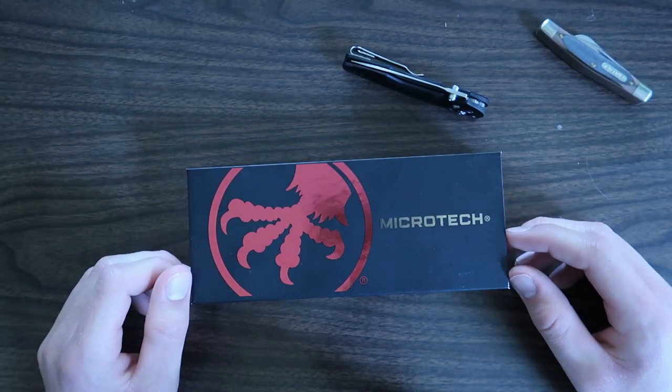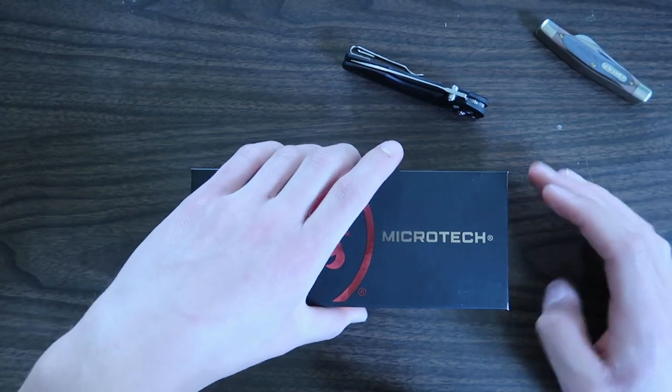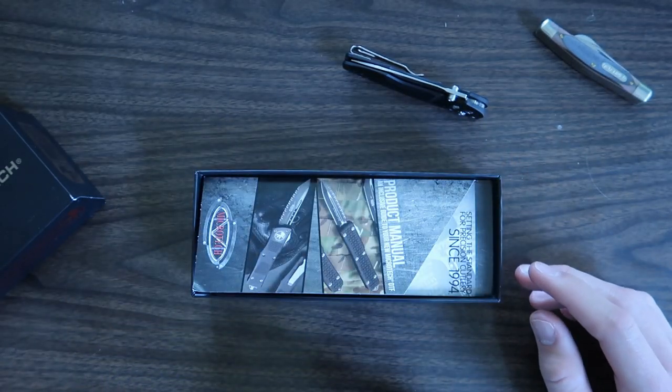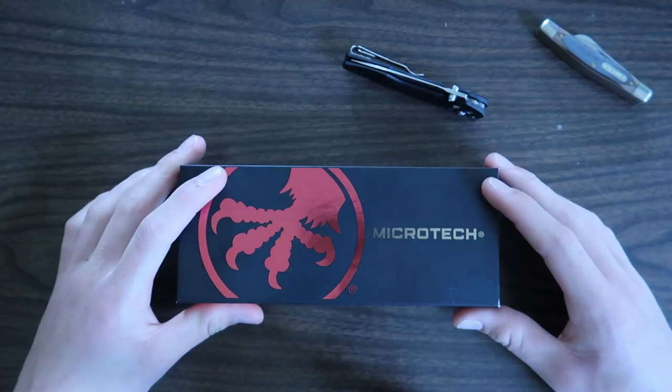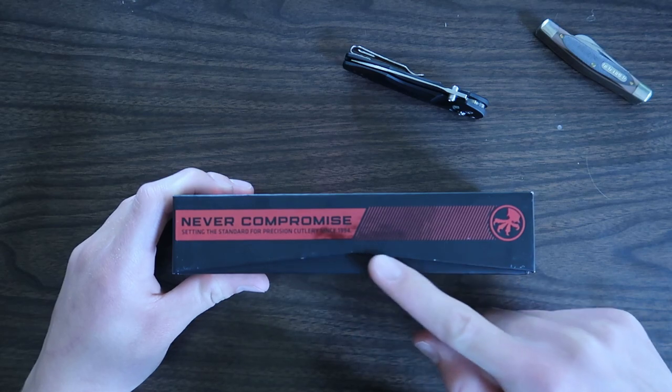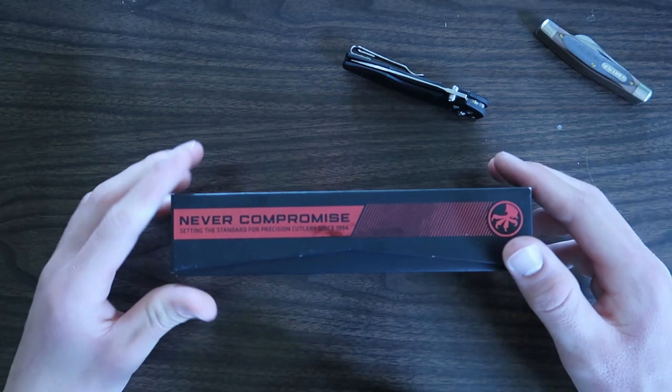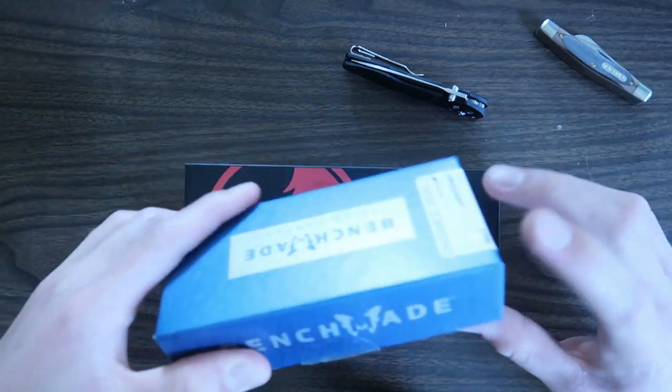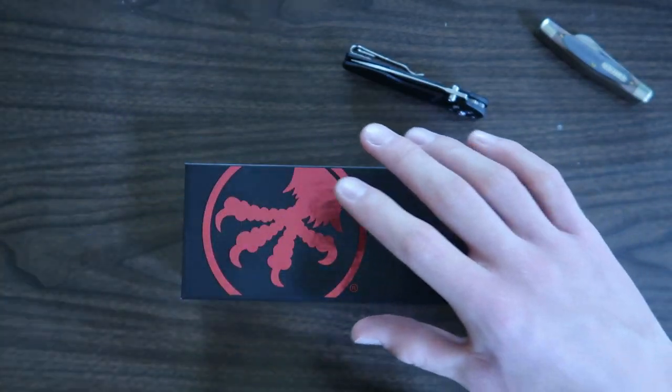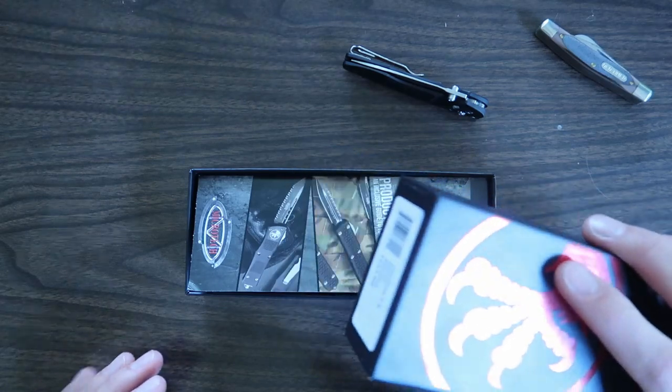This is the Microtech Ultratech. I have only seen pictures of it and wow, that box slides off very smoothly. Just based on the box alone, I like opening this box better than the Benchmade box. If you notice, this box has a little angle cut out in the side of the top, whereas on the Benchmade it does not. So you have to shake the Benchmade box to open it up. On this one, you just grab it and smoothly pick it up.